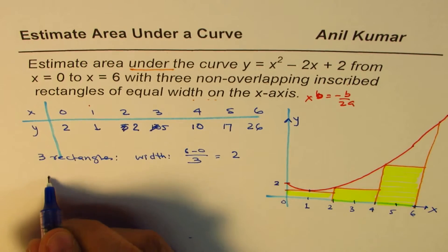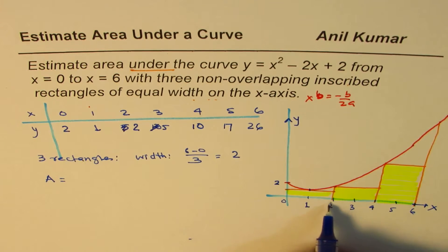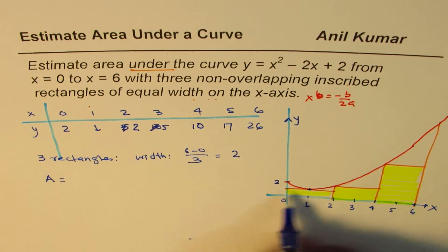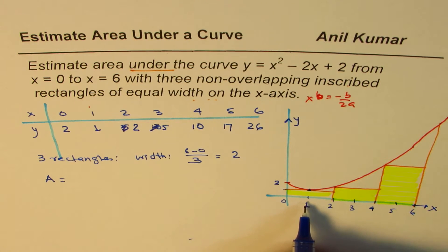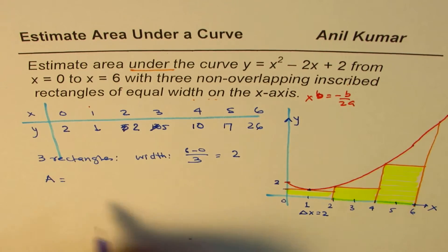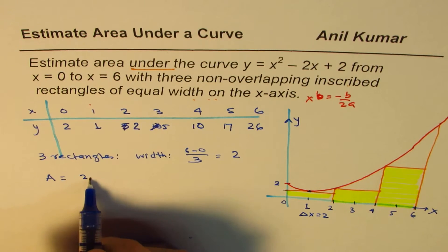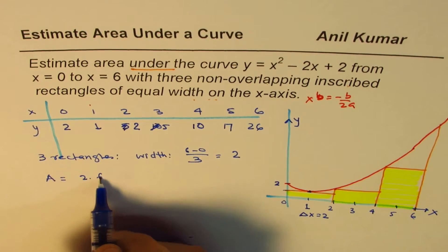So area of these rectangles is equals to the first one. This is the lowest point, so it has to be 1. So for the first one, width is 2. So we know width for each delta x equals to 2. So the height is 2 times the value of this function at 1. That is the value of function at 1.